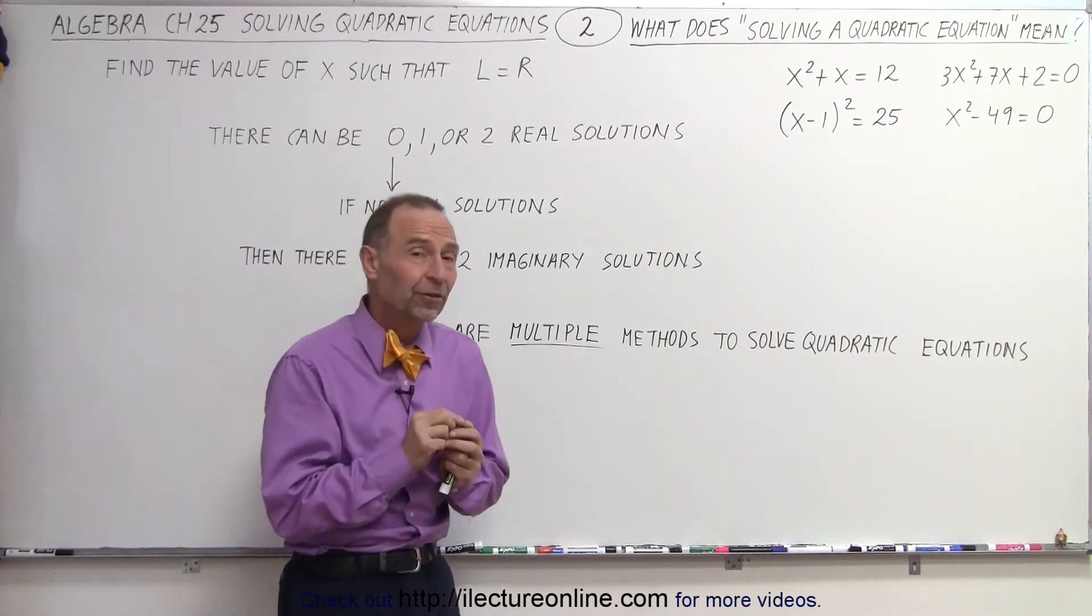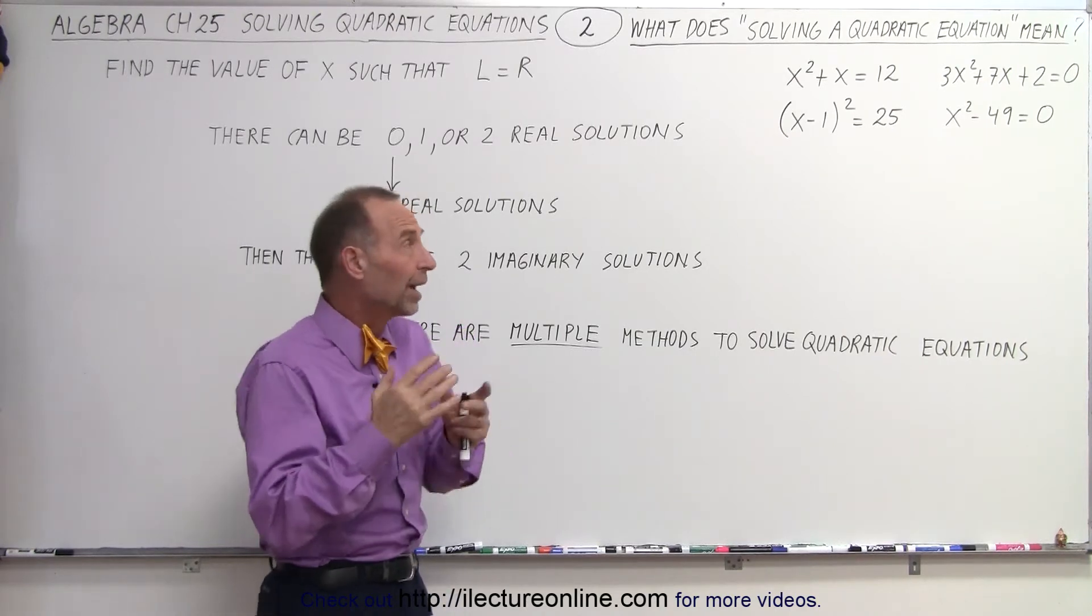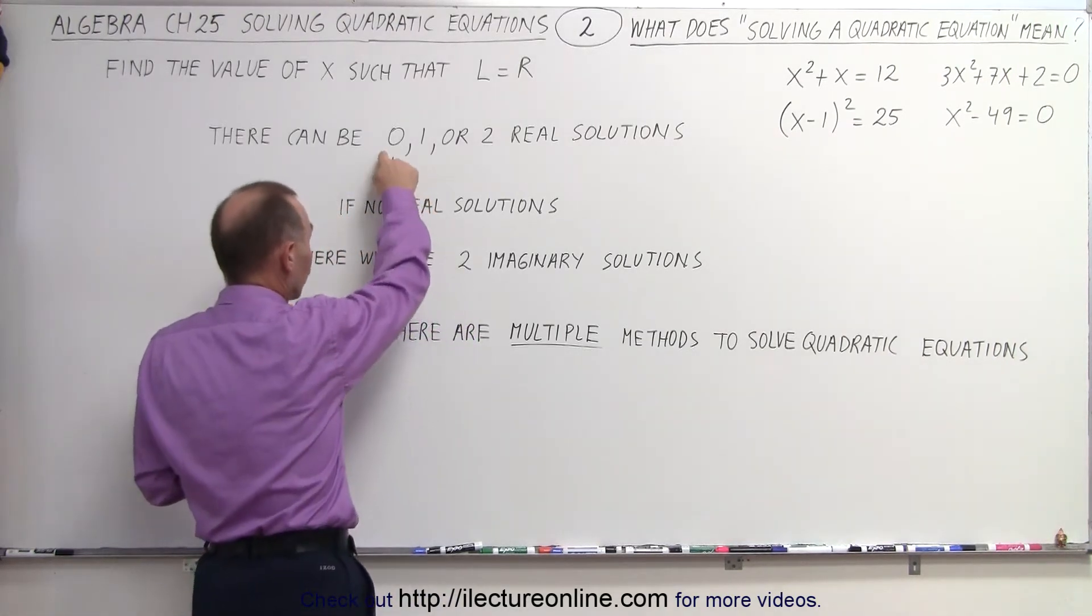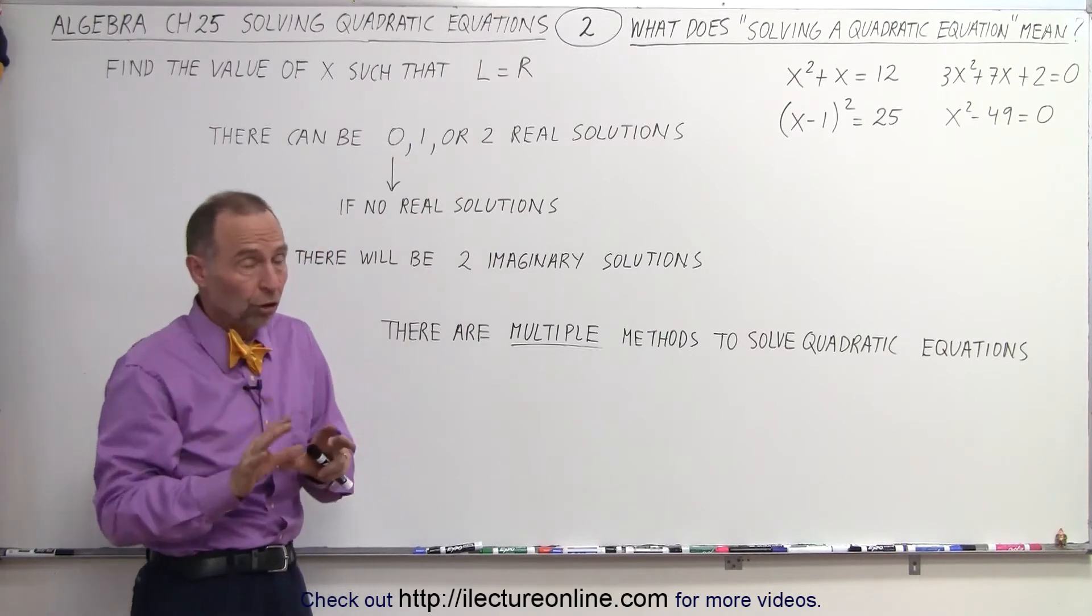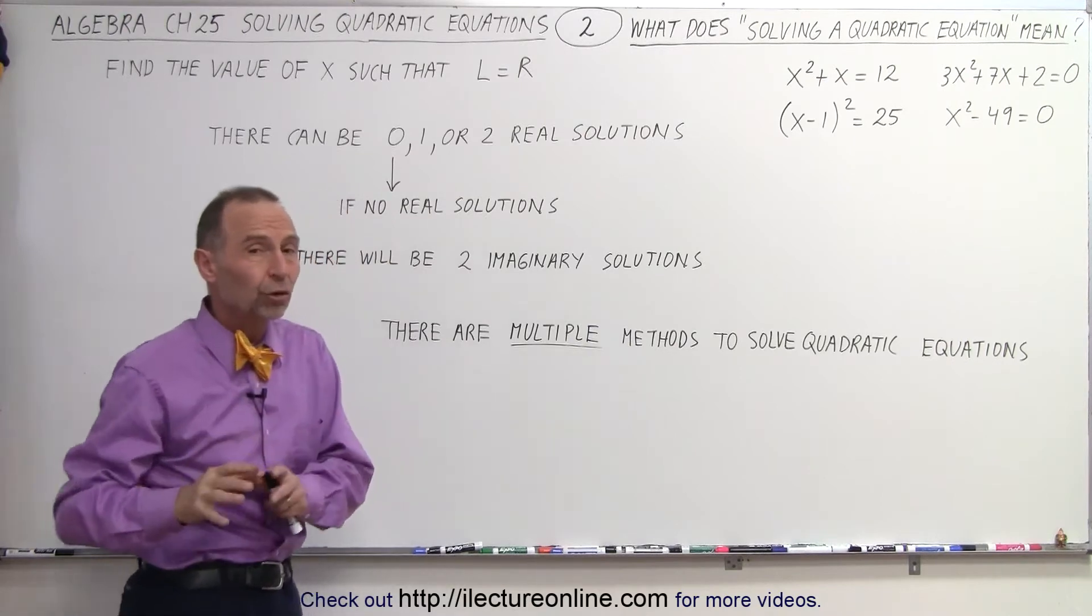Where there's a big difference is that with a linear equation, there's typically one solution. With a quadratic equation, you can have zero solutions, meaning there's no solution at all. That's possible. There may be just one solution, or there may be two real solutions.